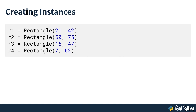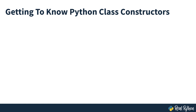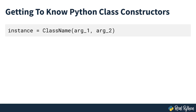Creating and initializing objects of a given class is a fundamental step in object-oriented programming. This step is often referred to as object construction or instantiation. The tool responsible for running this instantiation process is commonly known as a class constructor. In Python, to construct an object of a given class you just need to call the class with appropriate arguments, as you would call any function.